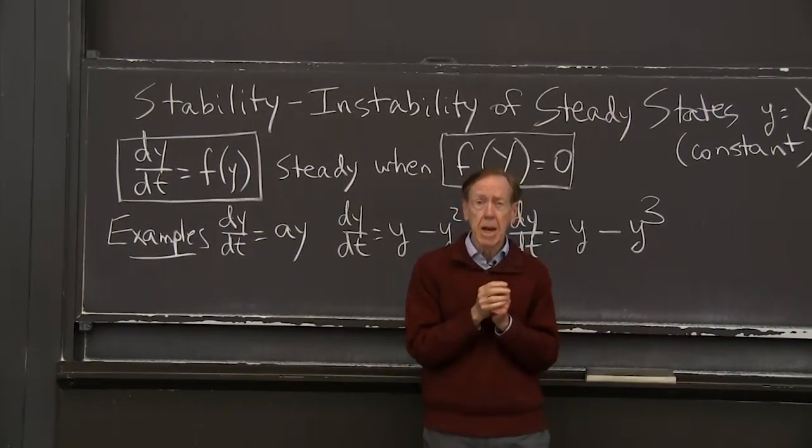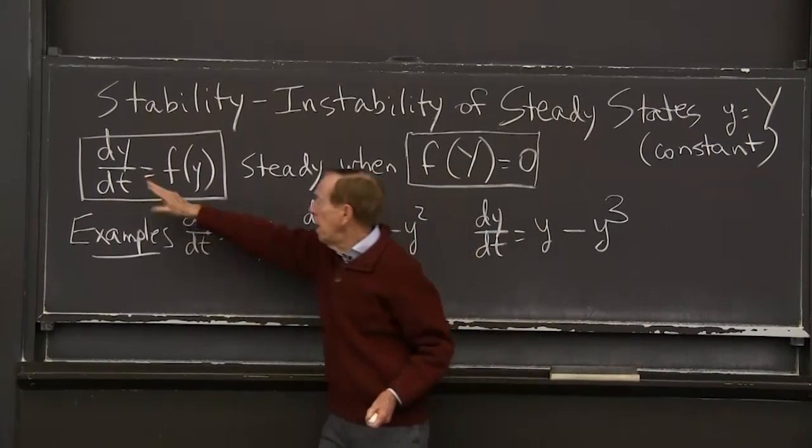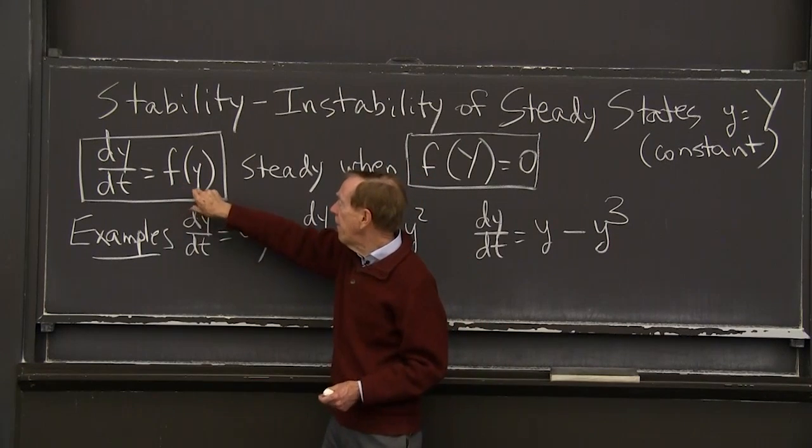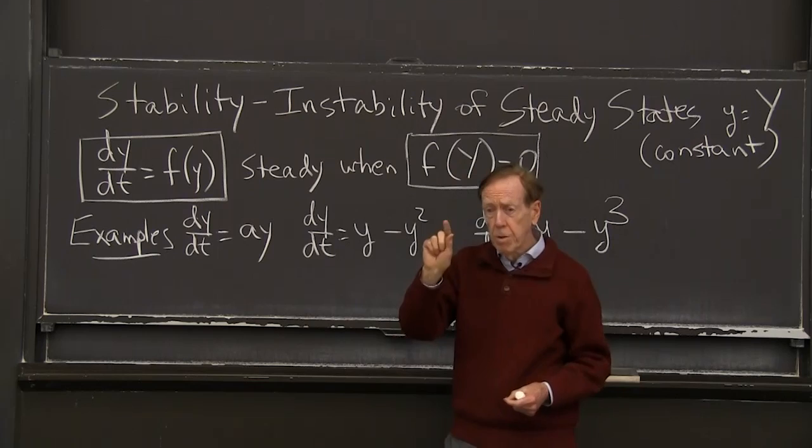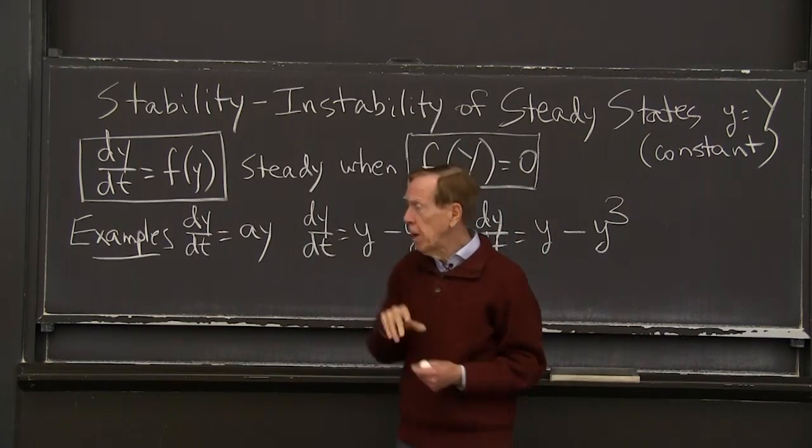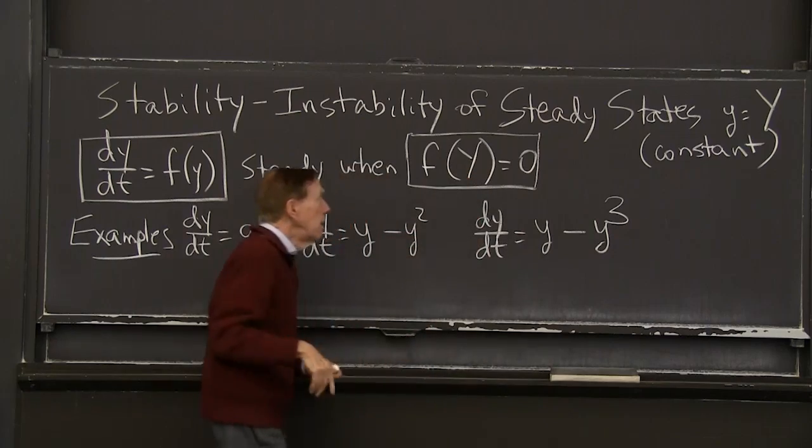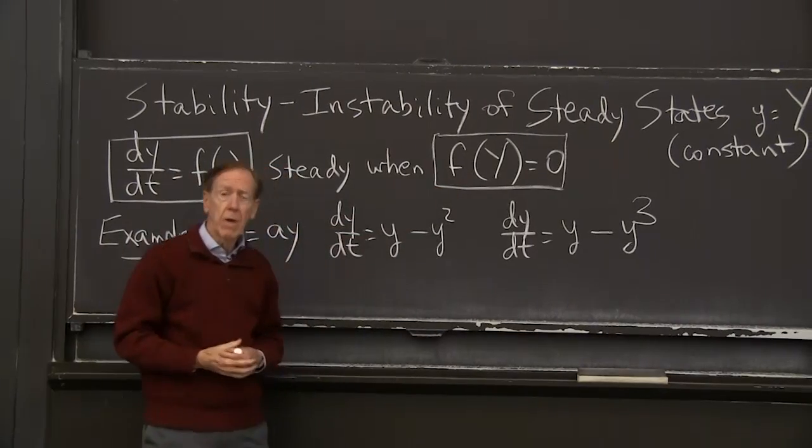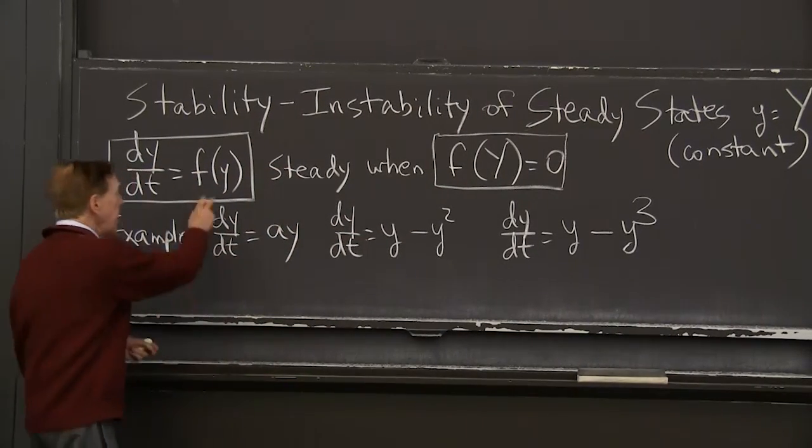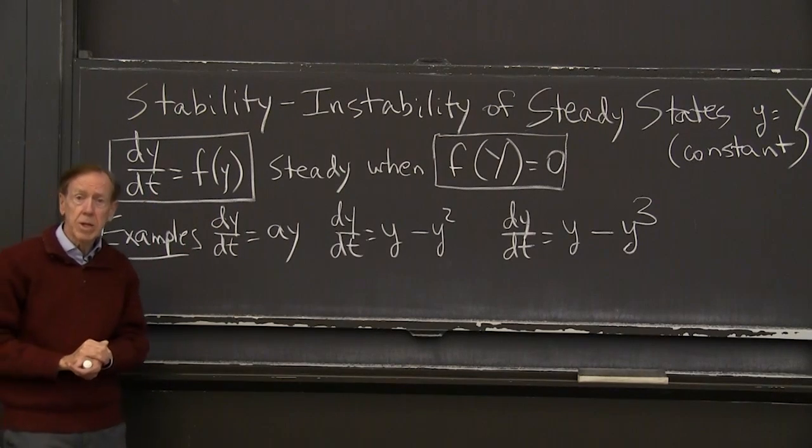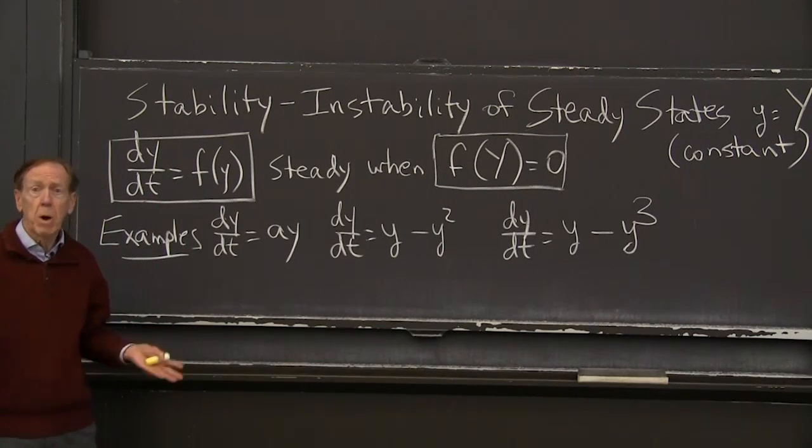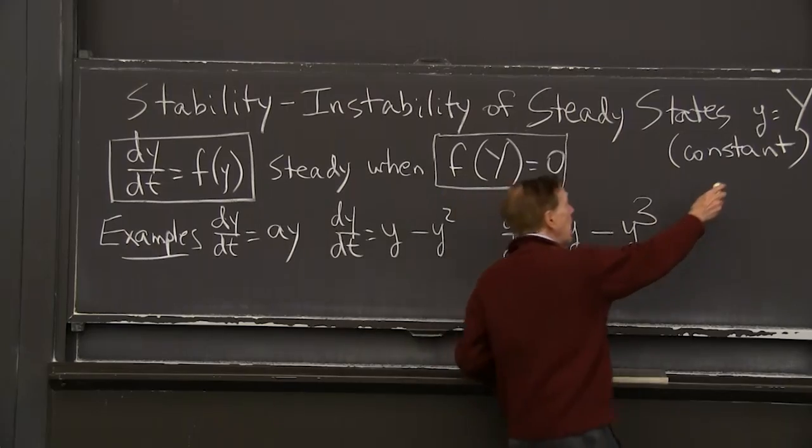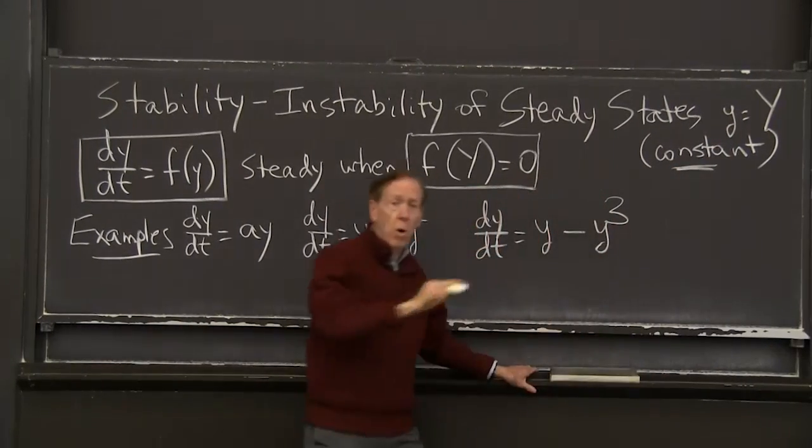dy/dt is f of y. I'm going to keep the right hand side not depending on t, just a function of y. And when do I have a steady state? There's a steady state when the derivative is 0. So if the derivative is 0 when f of y equals 0, let me call those special y's by a capital letter. So capital Y is a number, a starting value, where the right hand side of the equation is 0.